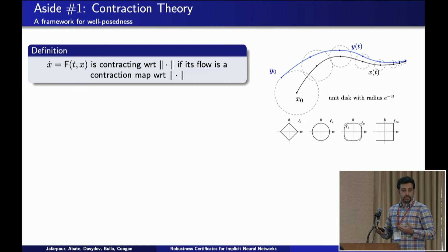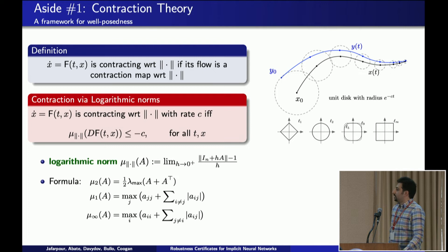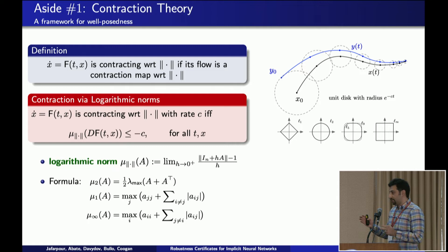A dynamical system is called contracting with respect to a specific norm if every two trajectories considered from that system have a distance between them that decreases with time. One of the main results in contraction theory is that contractivity of a vector field can be completely characterized by the logarithmic norm — also called matrix measure — of its Jacobian. For special cases like L1, L2, L-infinity, we have closed form formulas for that. Contraction theory for dynamical systems was introduced to study stability, but here we want to use it for well-posedness of our INN. The key result we borrow is: if a time-invariant dynamical system is contracting, it has a unique equilibrium point and every trajectory converges to it.